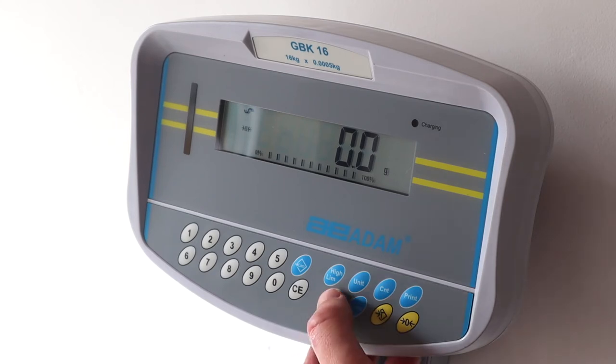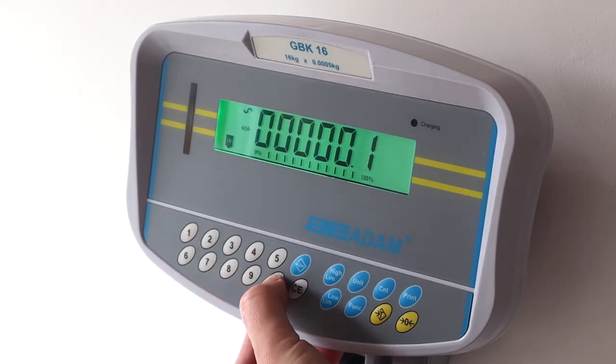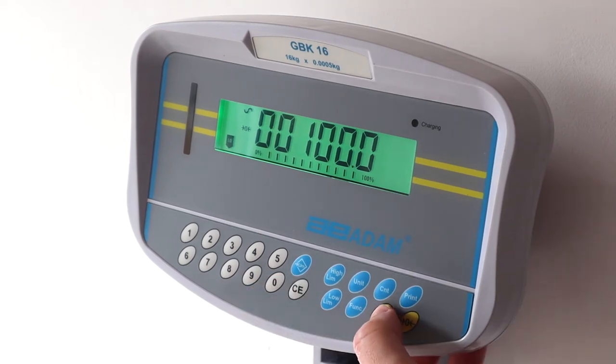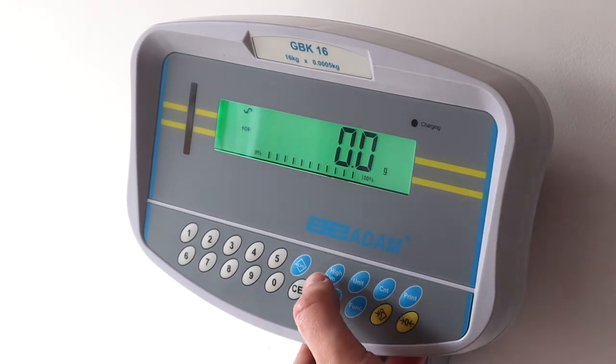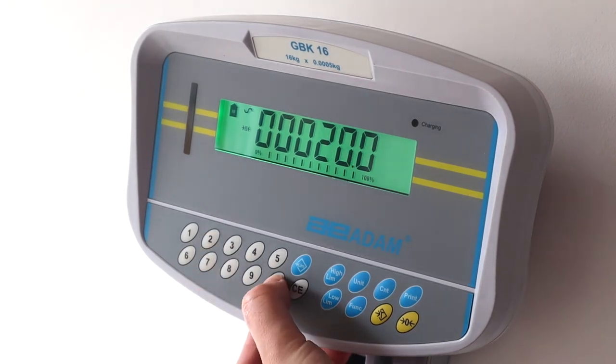If you're using the GBK for check weighing, set high and low limits by pressing the low button and entering your low limit using the full numeric keypad. Press tare to confirm. Set your high limit by pressing the high button, entering your high limit and pressing tare to confirm.